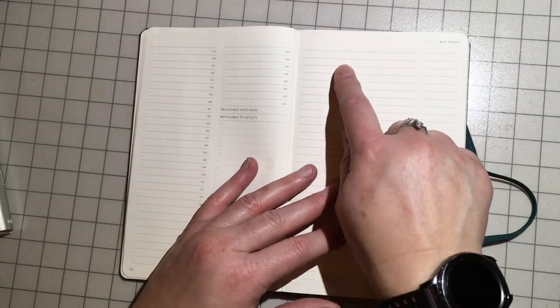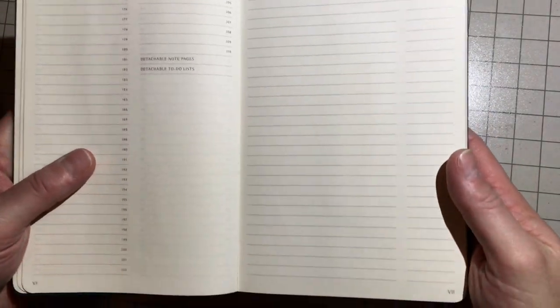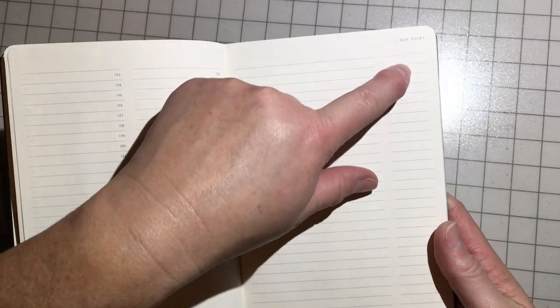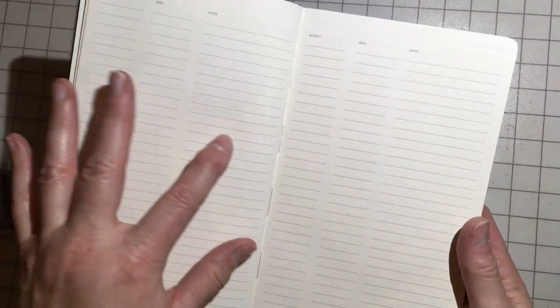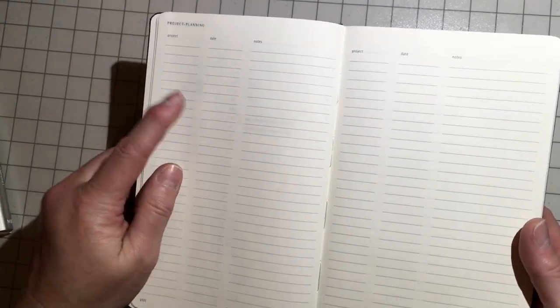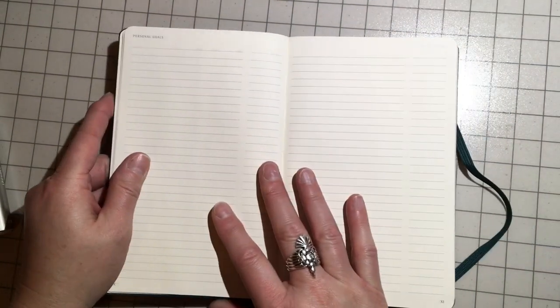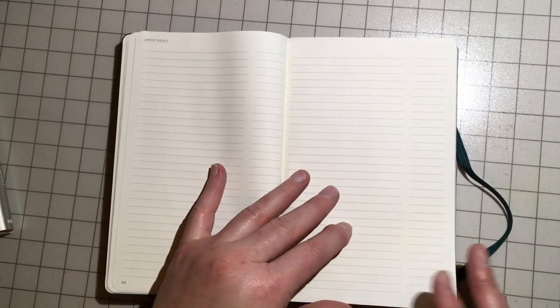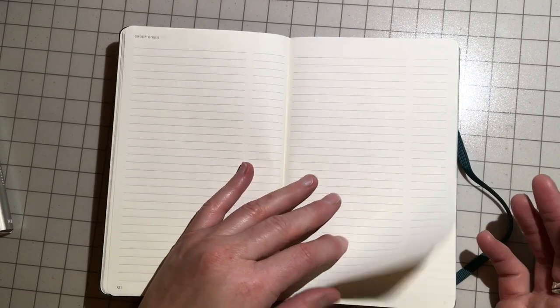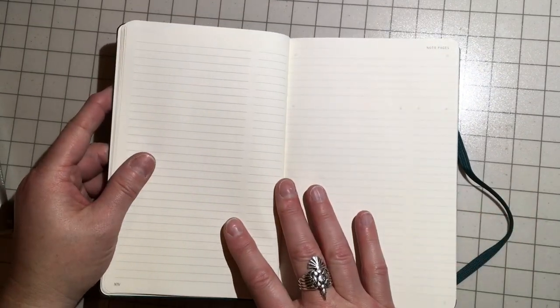Key tasks, I love how it has, I don't know if you can see that. It has the column here and then a smaller column there. And then project planning. So, the project, date and the notes. Project date and notes. So, you have two sheets of that. And then you have personal goals. And then what I'm imagining would be a date column there. Group goals, again with a larger space to write and a column for, I would imagine, either page or date, something. Then note pages.